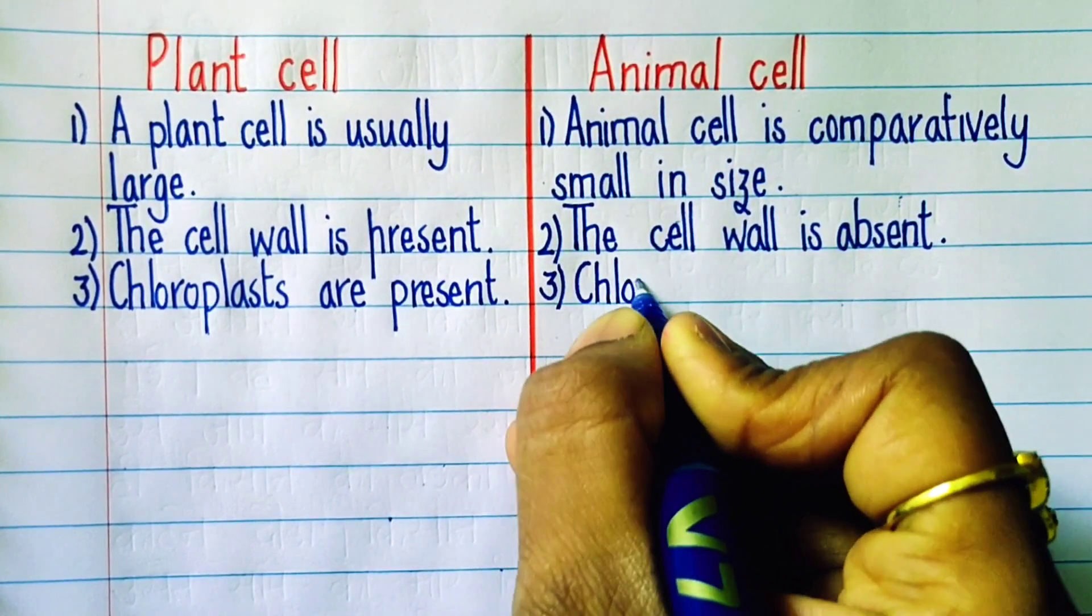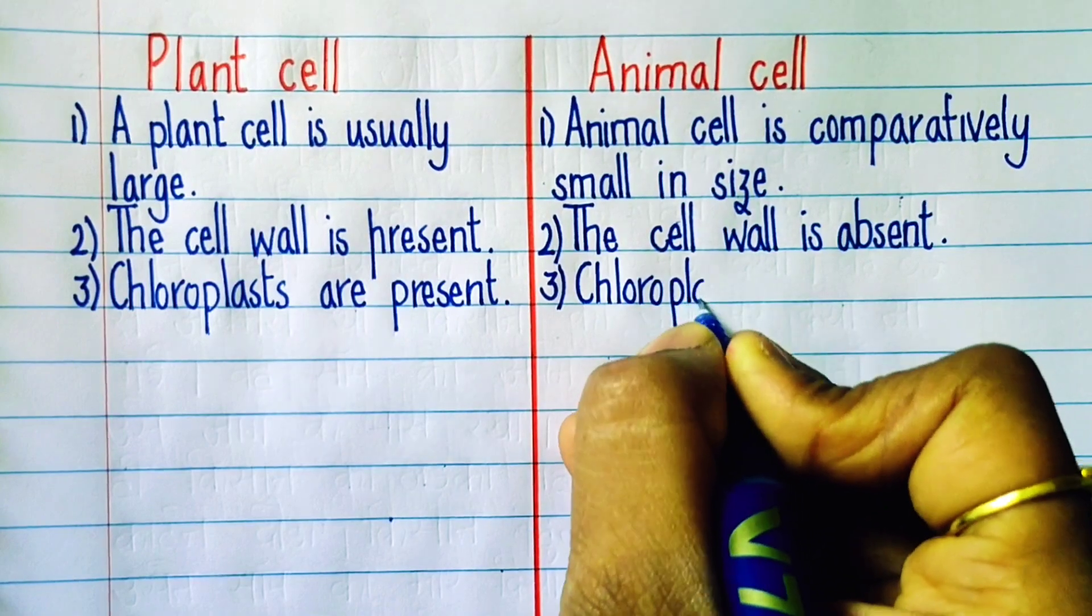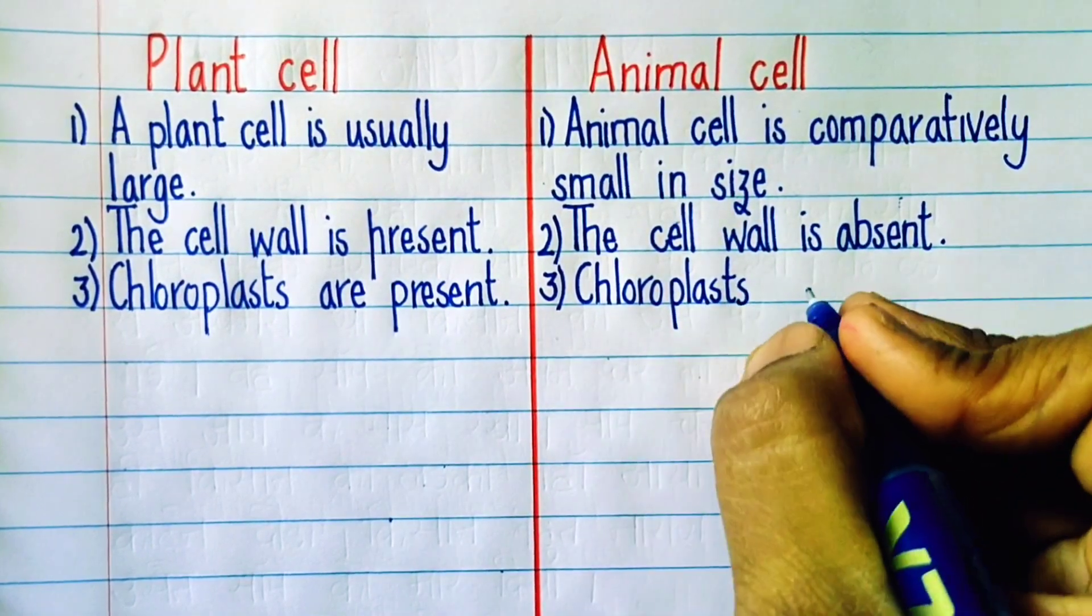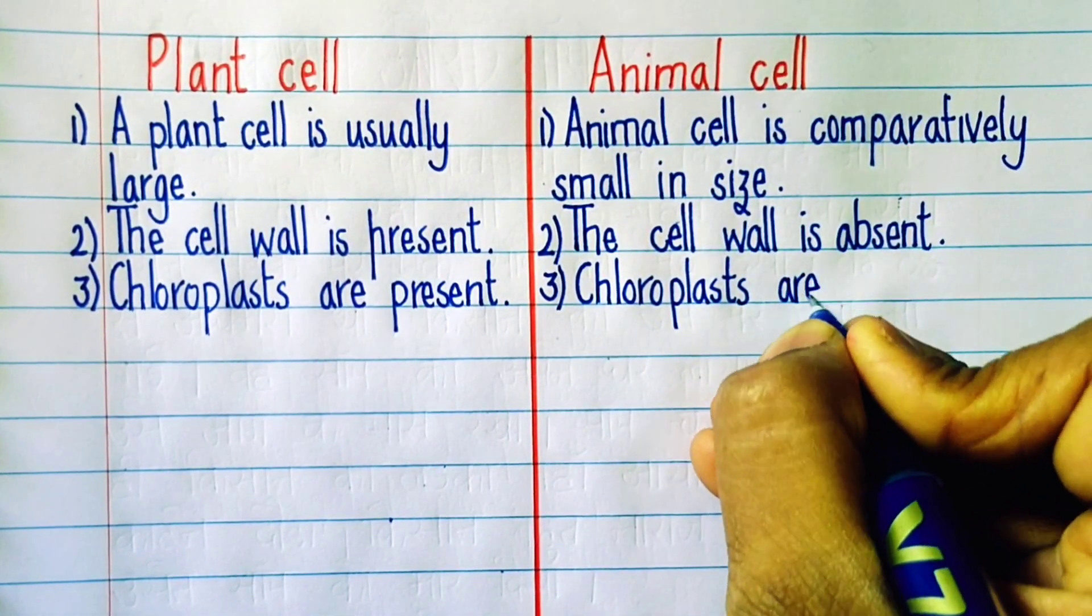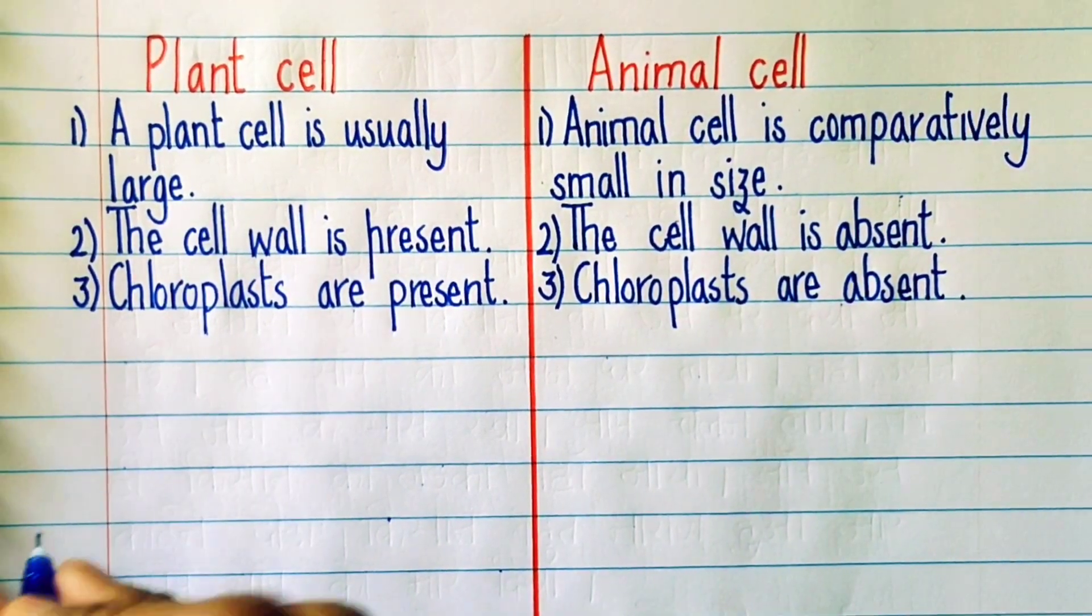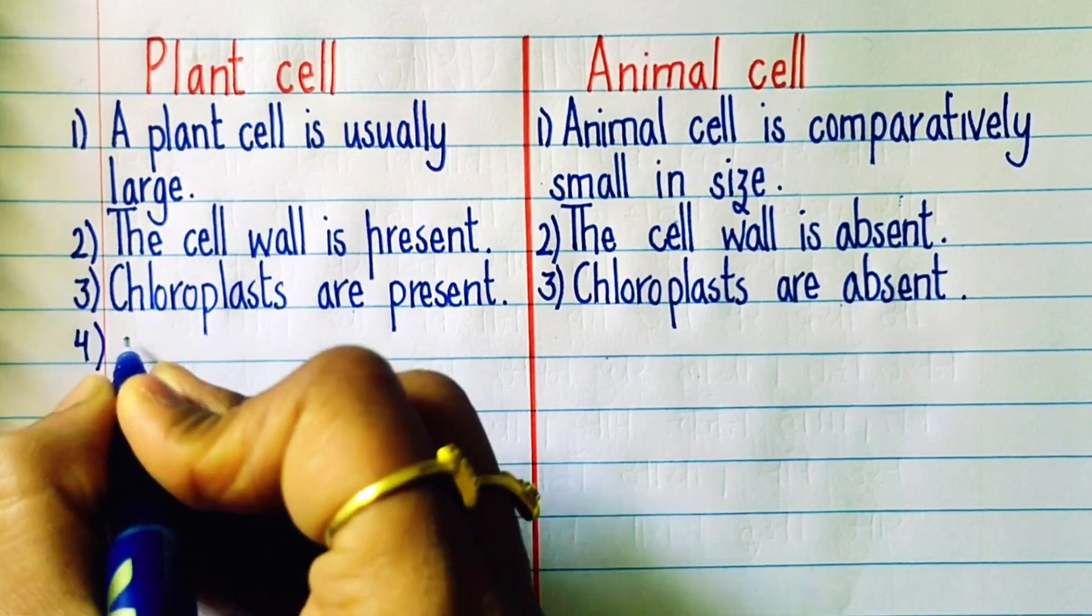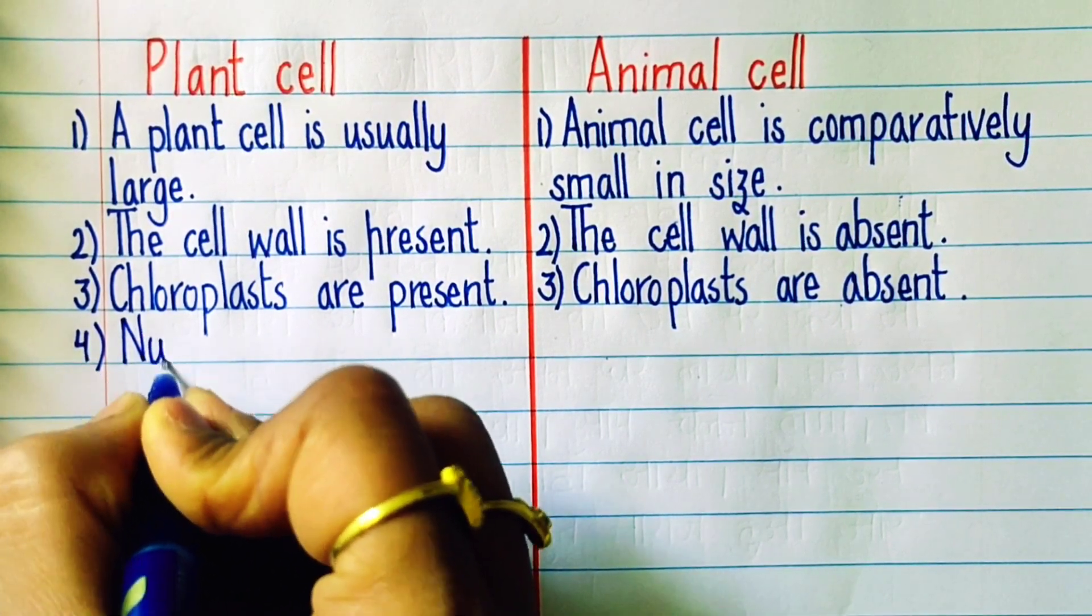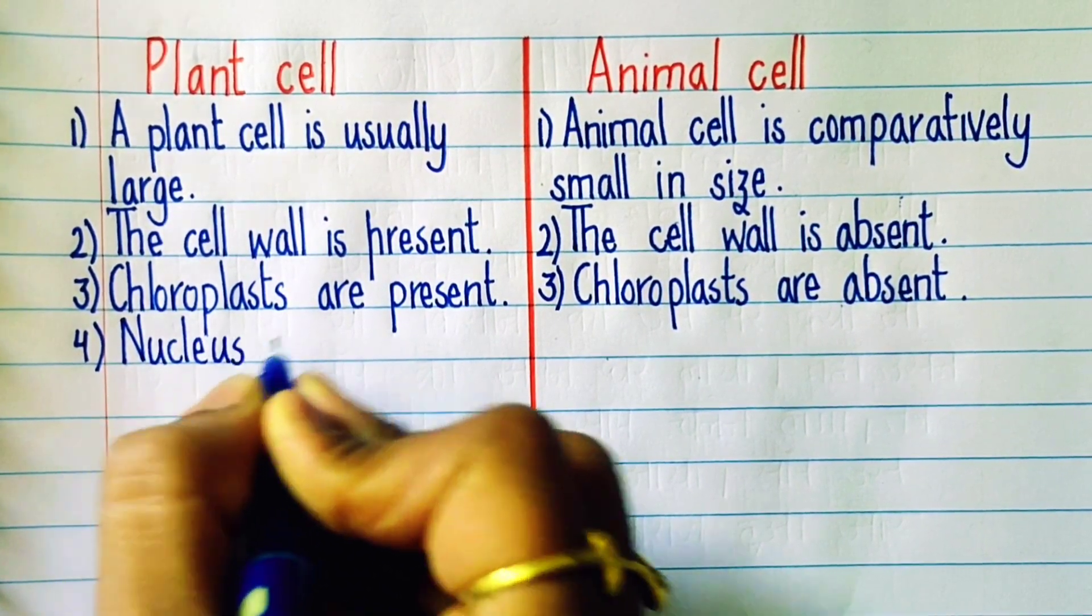Third point: Chloroplasts are present in case of plant cells, whereas in case of animal cells the chloroplasts are absent.